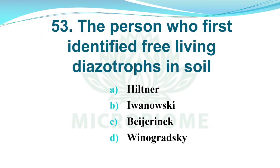And next, the person who first identified free-living diazotrophs in soil. Options: A) Hiltner, B) Ivanovsky, C) Behring, D) Winogratzky. The right answer is Option C, Behring.